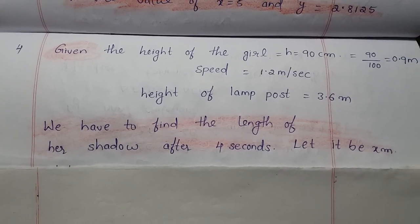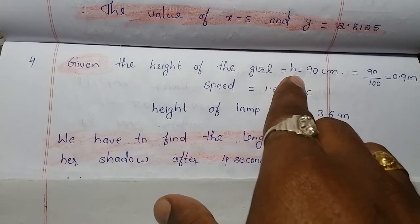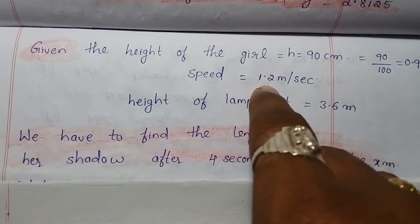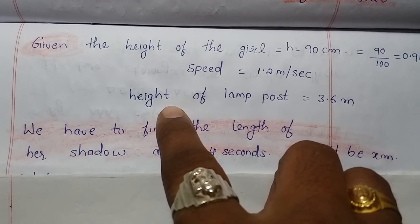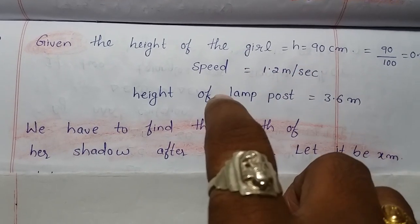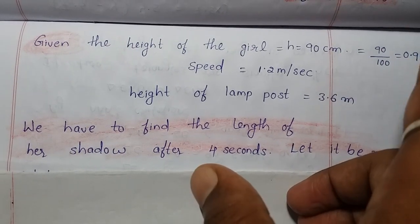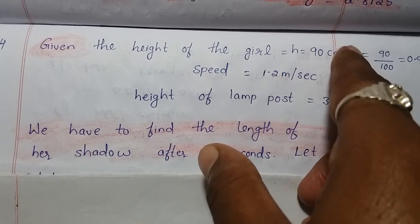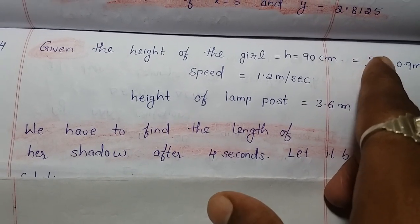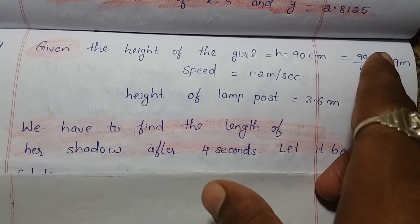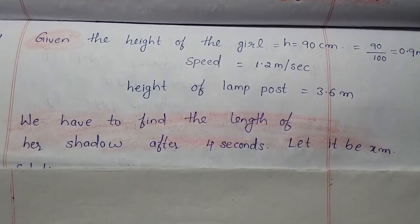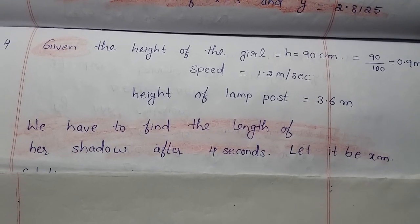In the first step we write the given statement: the height of the girl is h = 90 cm, speed is 1.2 m per second, and height of the lamp post is 3.6 m. Since height of the girl is in centimeters, we convert it to meters by dividing by 100: 90 divided by 100 equals 0.9 meters.